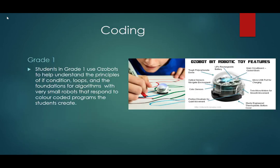So in grade one, students use Ozobots to help understand the principles of if conditions loops and the foundations for algorithms with very small robots that respond to color coded programs the students create. As you can see on the right side, this is one of the Ozobots and this is a picture of a student using color to create code that the robot responds to.